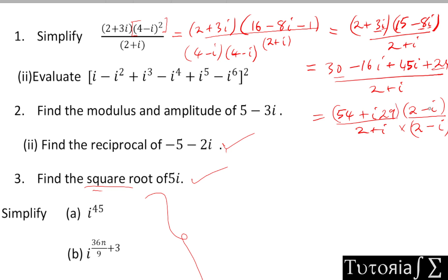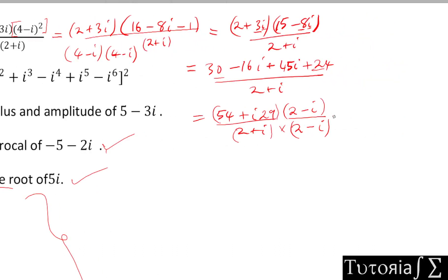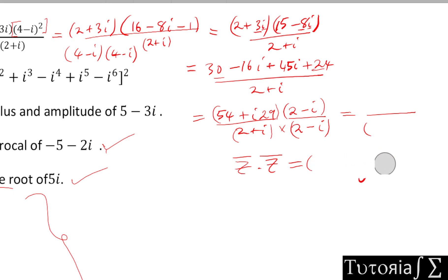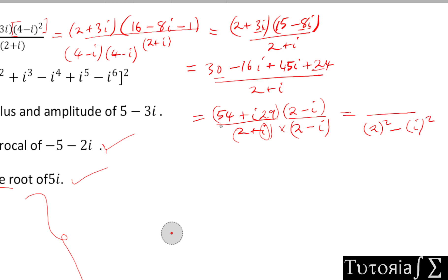Here's a very simple trick: when multiplying a complex number by its conjugate, you just take the real part squared minus the imaginary part squared. So for (2 + i)(2 - i), the real part is 2, so we get 2² minus i² — that equals 4 - (-1) = 5. This shortcut saves a lot of time, especially in exams.